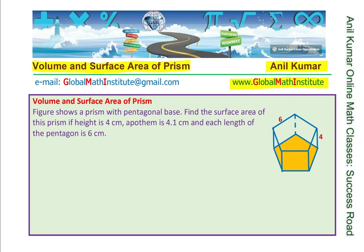So as you realize, in the first question, we have given you the apothem also. A prism has a height of 4 cm, apothem of 4.1 cm, and length of each side is 6 cm, so we can find the perimeter. Let us begin with the very first one and review the formula. To find the volume, you need the area of the base and then multiply it by height.